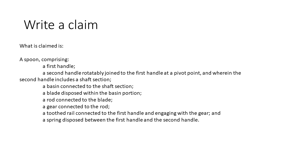Notice that in most cases a given element is recited in relation to another element. As an example, the rod connects to the blade, the gear connects to the rod, and so on. So we don't just say there is a gear floating out in space, but rather what within the invention the gear interacts with, and then we have the rail engaging with the gear and so on.